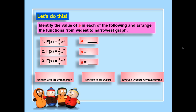Identify the value of a in each of the following and arrange the functions from widest to narrowest graph. Number 1: the function defined by two-thirds x squared. Number 2: the quadratic function defined by three-halves x squared. Number 3 is also given. You can write your answer in a scratch paper, in your notebook, or answer mentally.